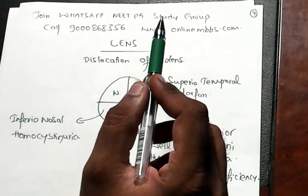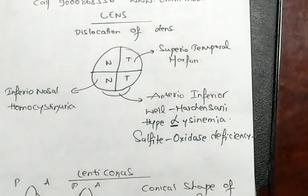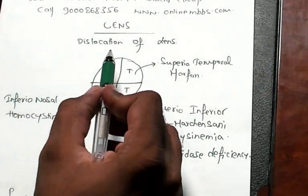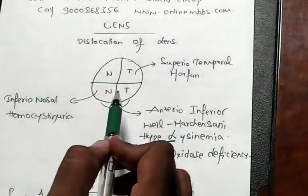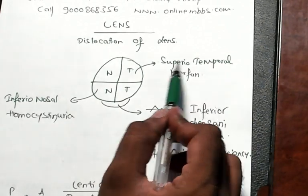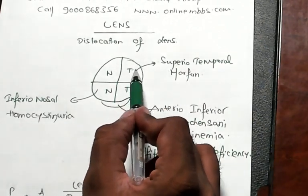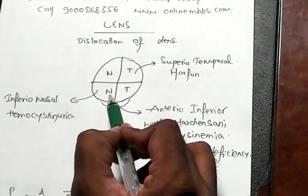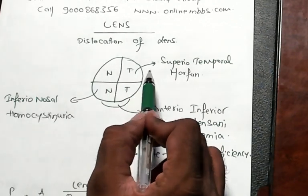Let us talk about the lens. Dislocation of the lens is a favorite question. What is the direction? Superior temporal, a superior quadrant, inferior quadrant, a temporal, nasal.